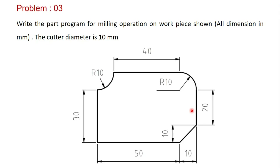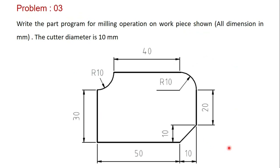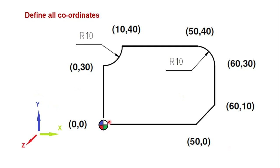Now let's take the next example: write a part program for a milling operation on the workpiece shown. The workpiece profile consists of: a 50mm straight section, a taper of 10mm, a straight section of 20mm, a circular arc of radius 10mm, another straight section, another circular arc, and then a final straight section. The milling operation follows this profile. Key coordinate points defined from origin are: (50,50), (60,10), (60,30), (50,40), (10,40), and (0,30).